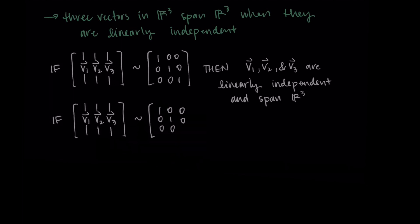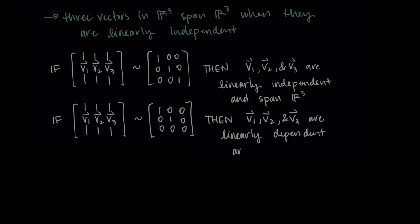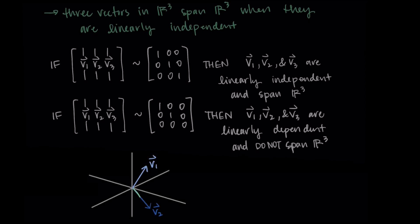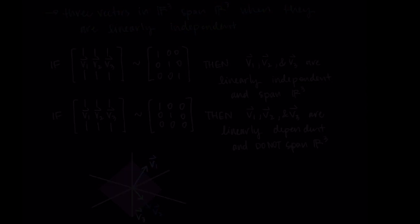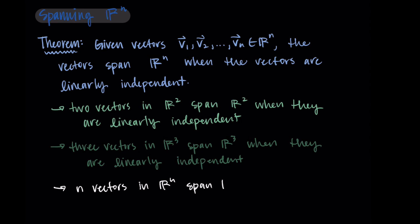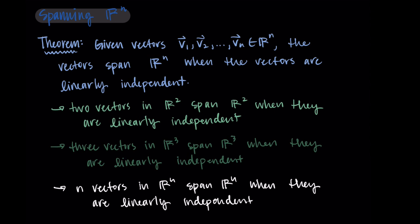However, if we have the same set of vectors and they row reduce to something with a free variable — say this third column is all zeros — then the vectors are linearly dependent and won't span R3. We really only have two unique directions, so we're walking in something like a plane and not getting to all of R3. In general, n vectors in Rn will span Rn when they are linearly independent. We need at least n different unique directions; if one is the same as another, we can't reach all points in the space.